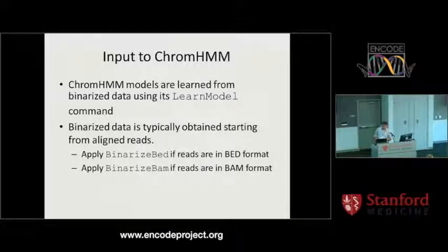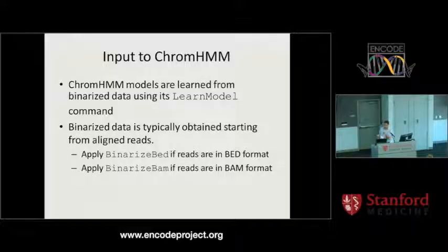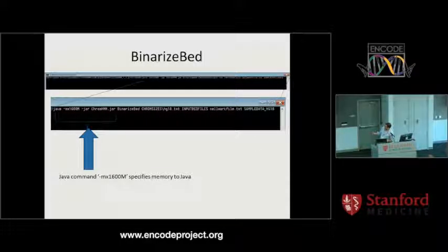The ChromHMM modeling part is based on binarized data — ones and zeros at 200 base pair resolution by default. The recommended way to produce this is to give ChromHMM a set of aligned reads, either in BAM format or BED format. There's a different command — either BinarizeBed or BinarizeBAM — depending on the format of your aligned reads, but otherwise the commands are the same.